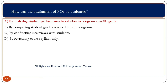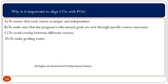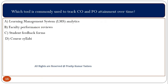What is an assessment rubric? Basically, an assessment rubric is a tool that provides detailed criteria for evaluating student work. Why is it important to align CO with PO? The best purpose of aligning CO with PO is to make sure that the program's educational goals are met through the specific course outcomes. Which tool is commonly used to track CO and PO attainment over time? If you are not running any ERP, by using Excel also you can track CO and PO attainment. But if you are using any ERP or management tool, you can use that as well — the first option, learning management system, is correct.